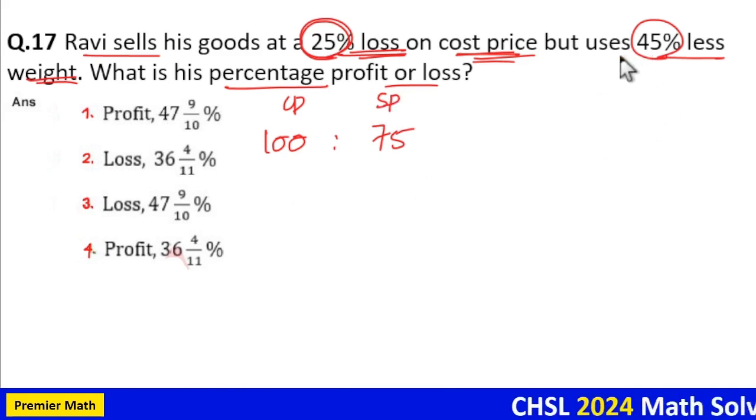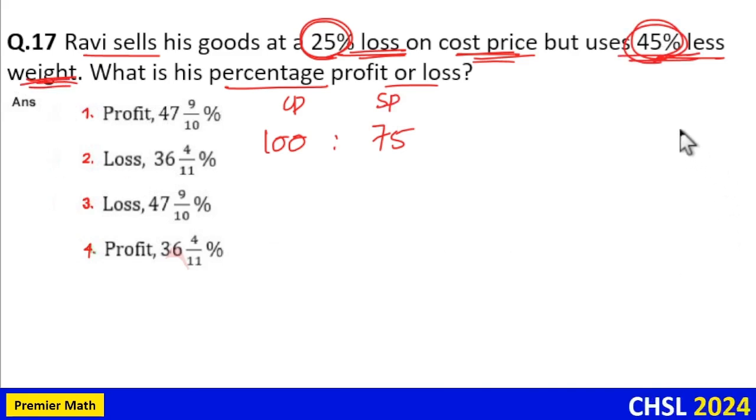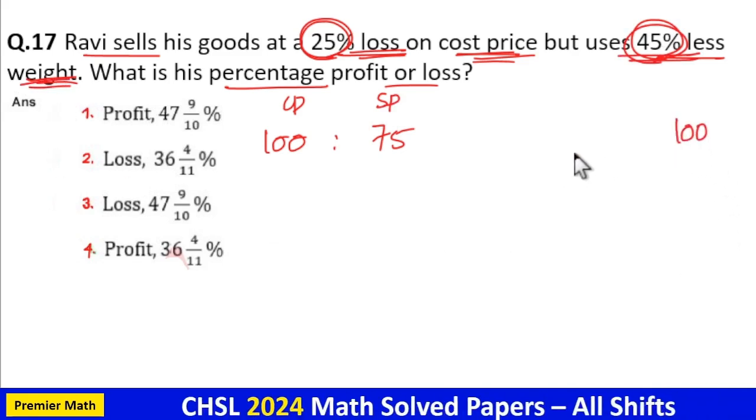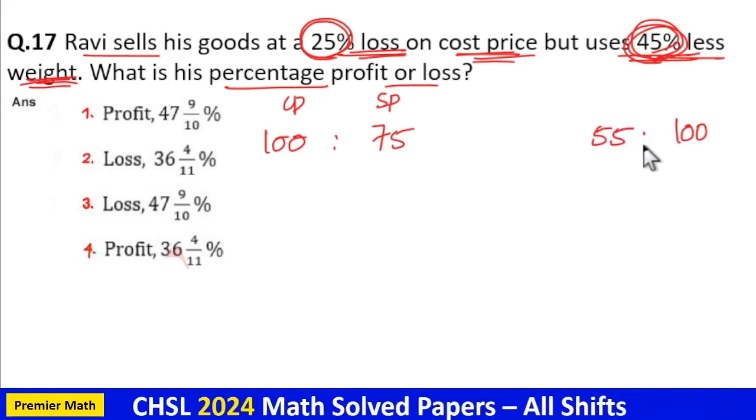Now to gain profit, he uses 45% less weight which means when customer asking for 100 kg, he will give 45% less weight, that is he will give 55 kg.